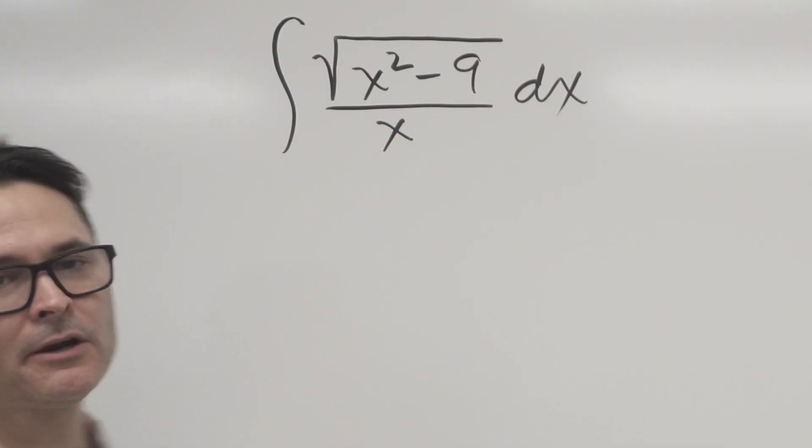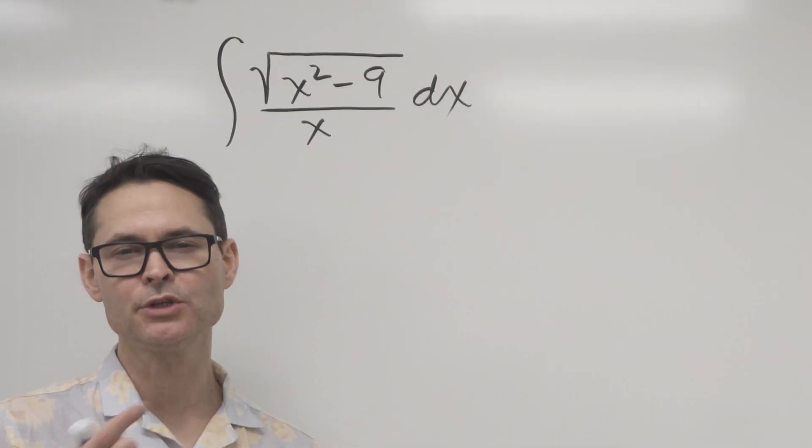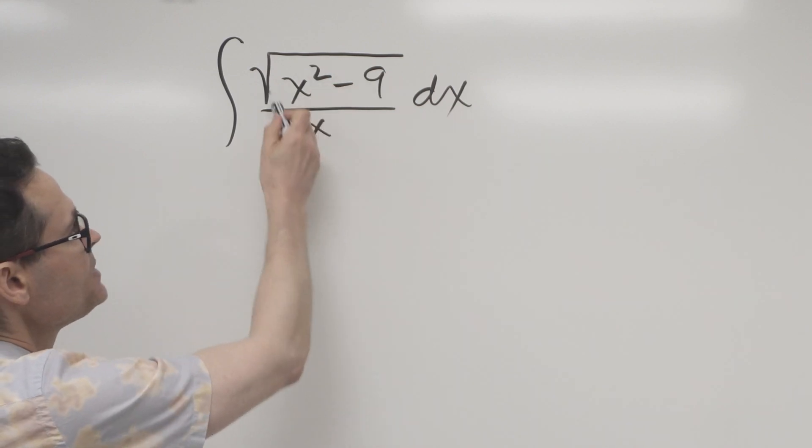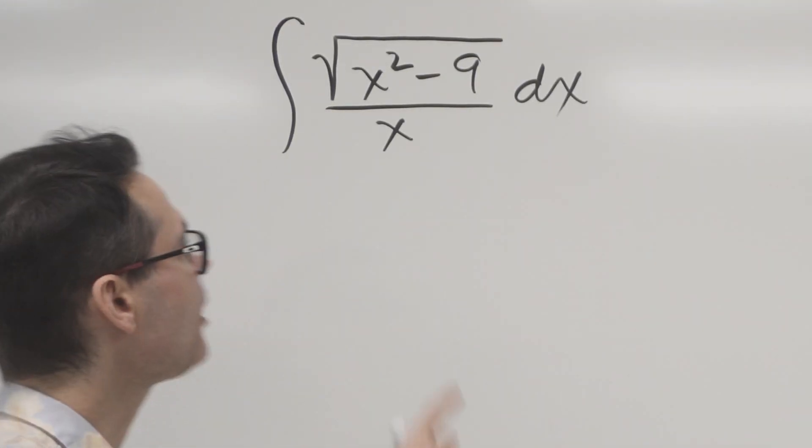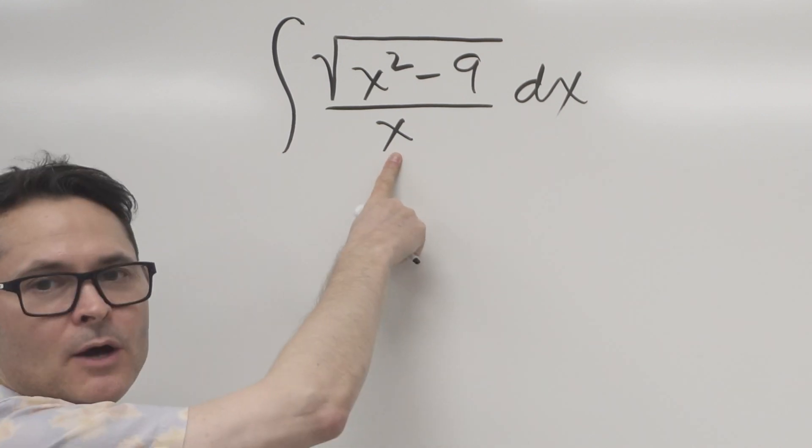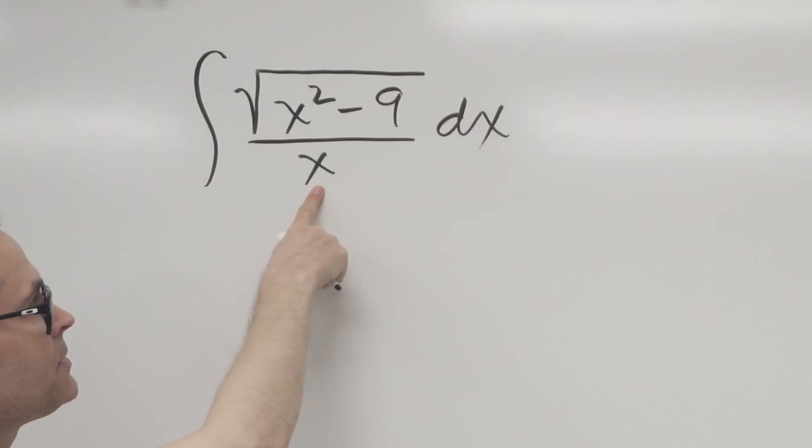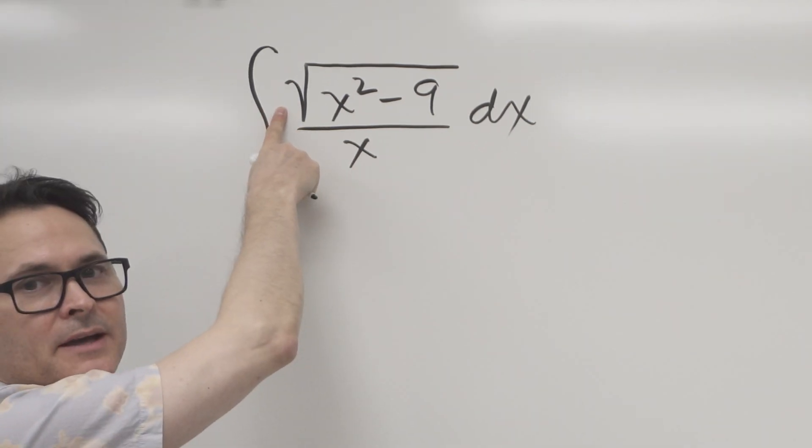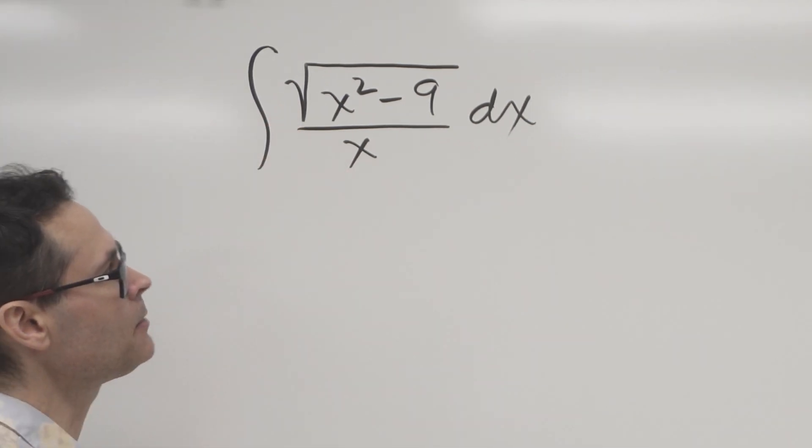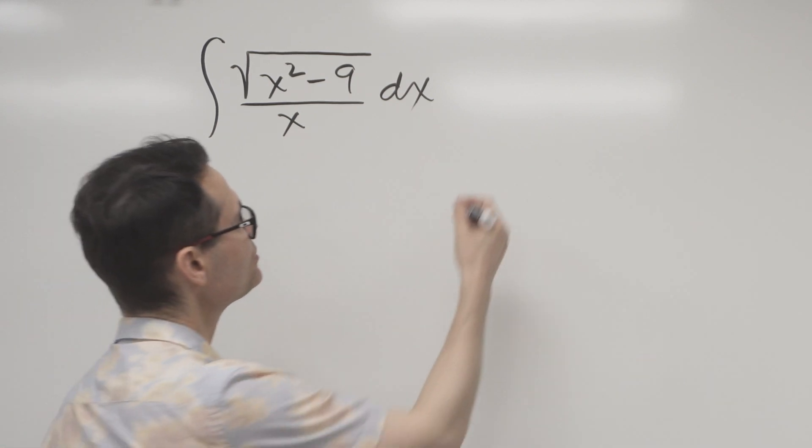This first one may appear on surface just to be a regular U substitution, where you would take the expression under the radical and set it equal to U. The problem is the variable on the outside of the radical is downstairs in the denominator. A direct U substitution would be perfect if you had the X in the numerator, but it's down in the denominator. So there's a couple of other things we can use.